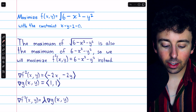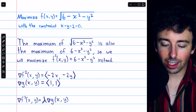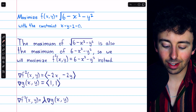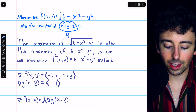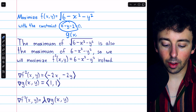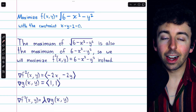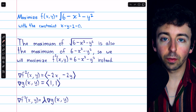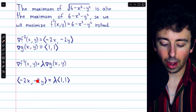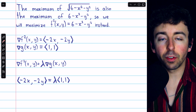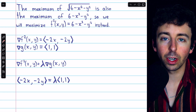Again, we begin by finding the gradients. The gradient of f² is just going to be the partial derivative with respect to x, which is -2x, and the second component is the partial derivative with respect to y, which is -2y. Then the gradient of g: we're just going to say that g is x + y - 2 and the constraint is that g must equal 0. So the first component of its gradient is the partial derivative with respect to x, which is 1, and same thing for the partial derivative with respect to y.